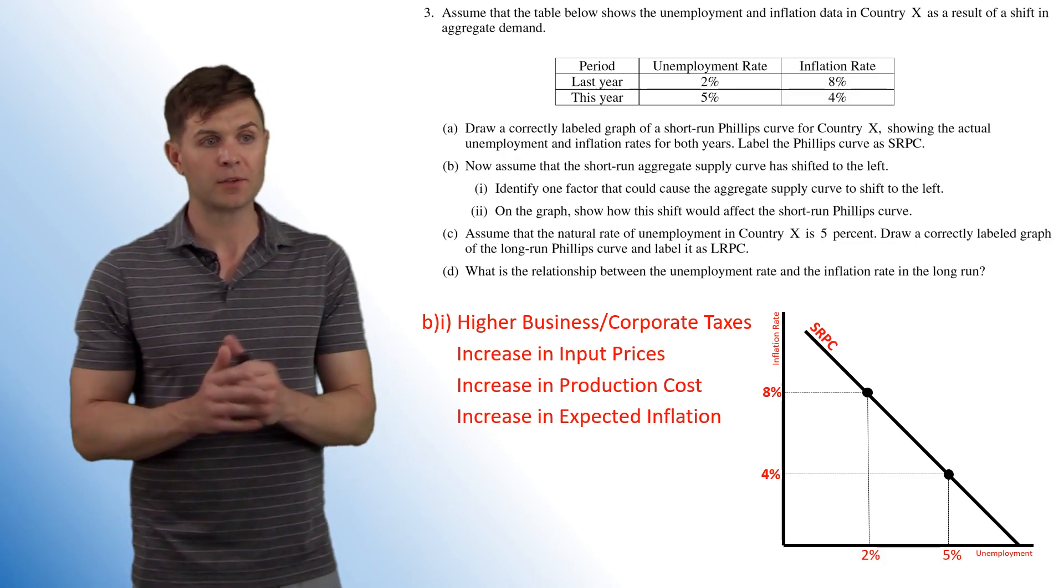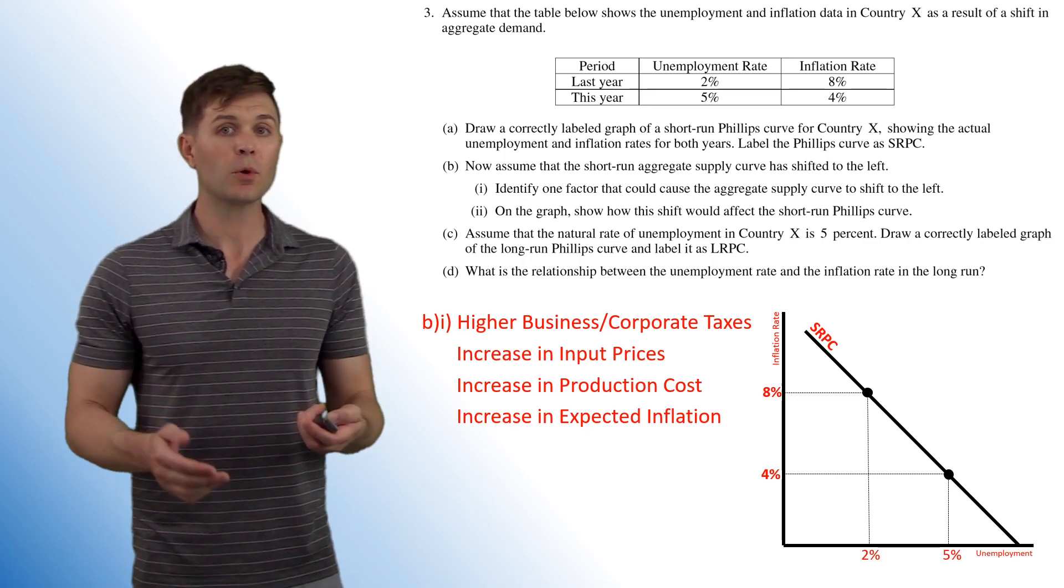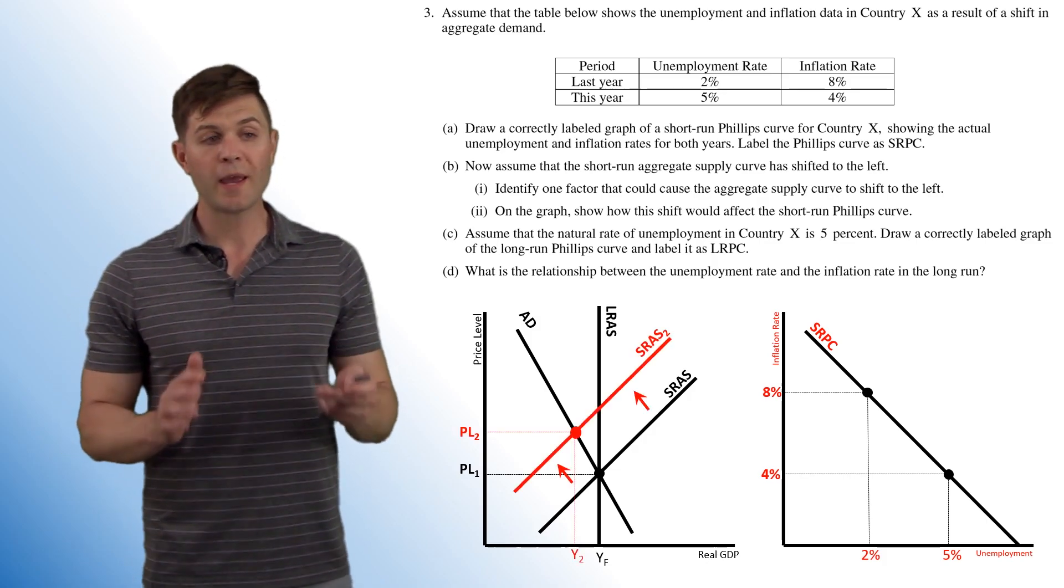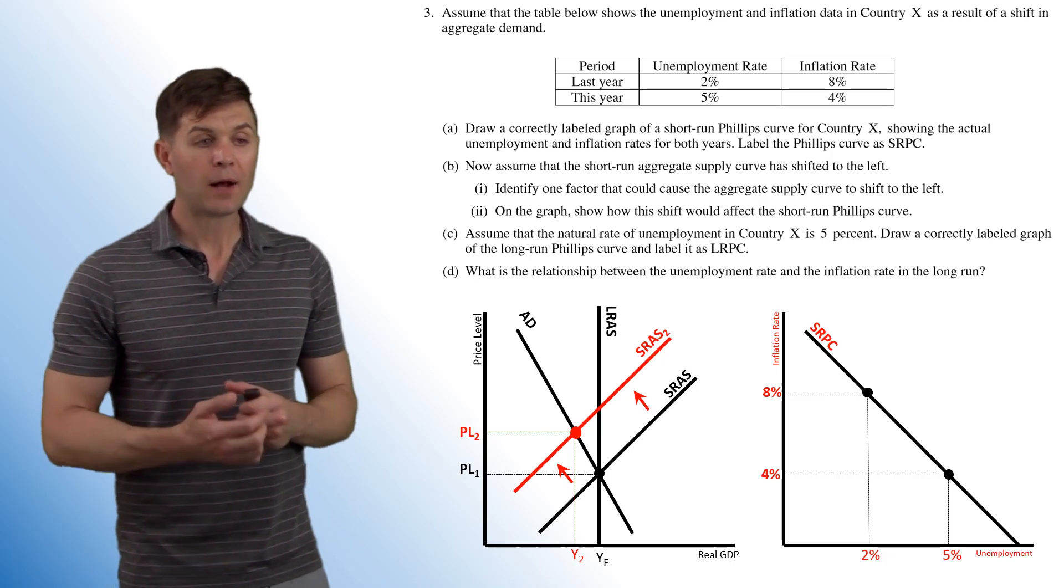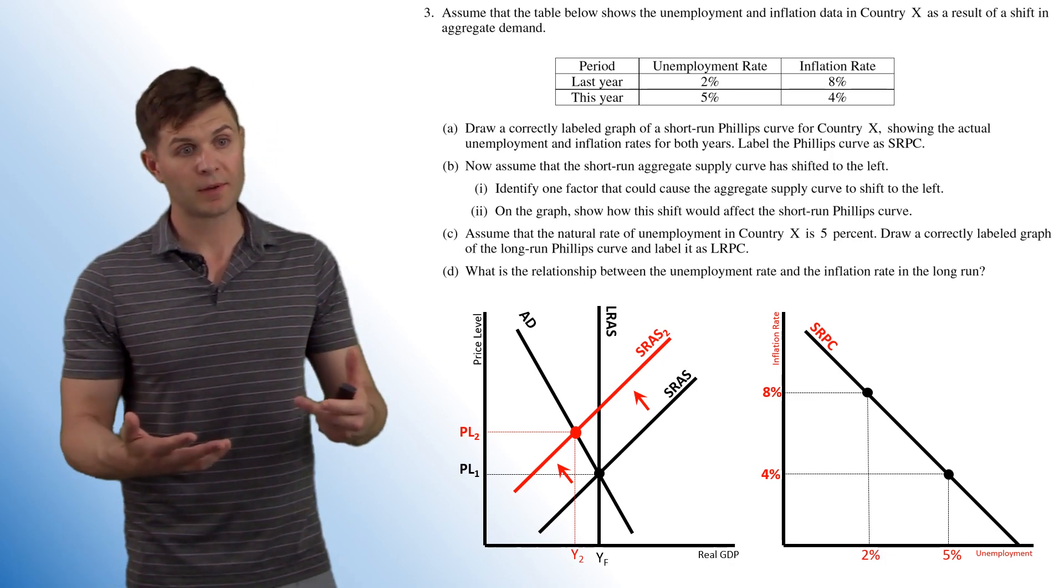Now the next part has us on the graph show how the shift would affect the short run Phillips curve. And this one's a little more difficult. So I'm gonna throw the ASAD curve out there just to kind of explain what's going on here. So we have our left shifting short run aggregate supply curve. Now that's going to cause a higher price level and a lower GDP, which means a higher unemployment rate.